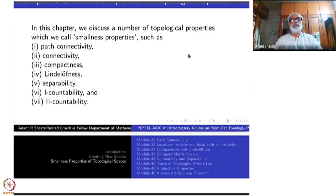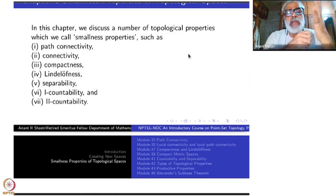Welcome to chapter 2 of point set topology course part 1. In this chapter we discuss a number of topological properties which can be called smallness properties. I have listed them here: path connectivity, compactness, Lindelof property, separability, first and second accountability.